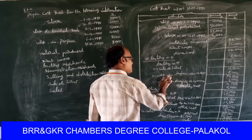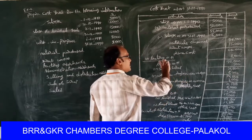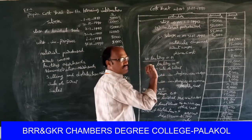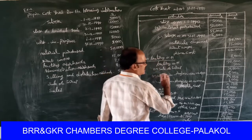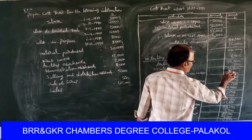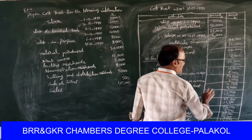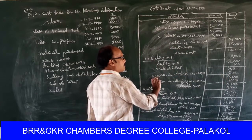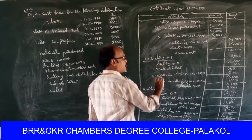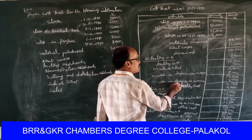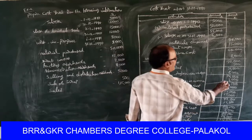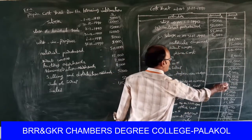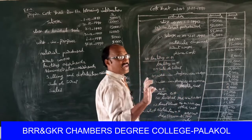Opening value of work in progress is always added to factory overheads. Seventy-one thousand five hundred plus eight thousand equals seventy-nine thousand five hundred. Closing stock of work in progress must be deducted — minus eight thousand. Result is seventy-one thousand five hundred, treated as factory cost.